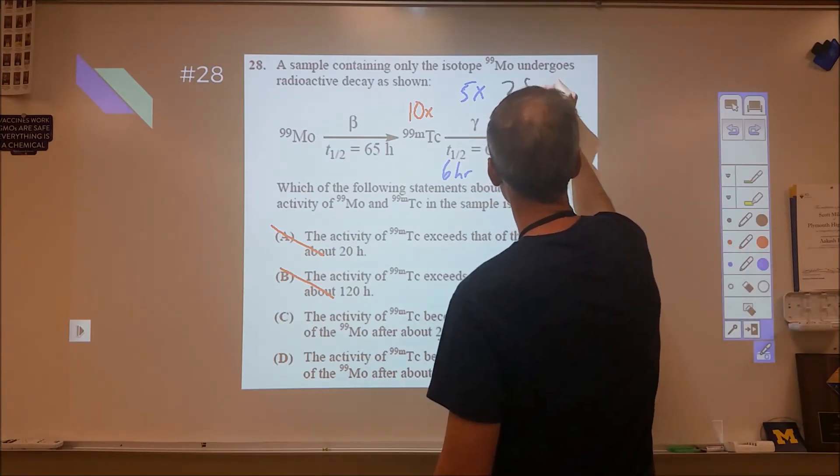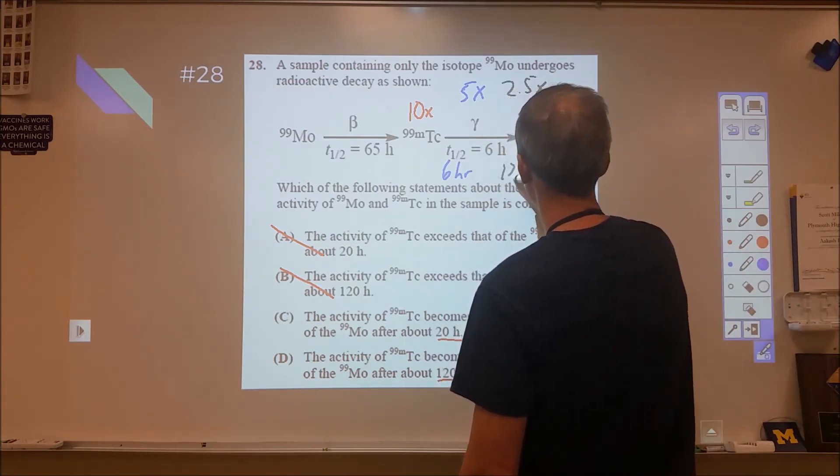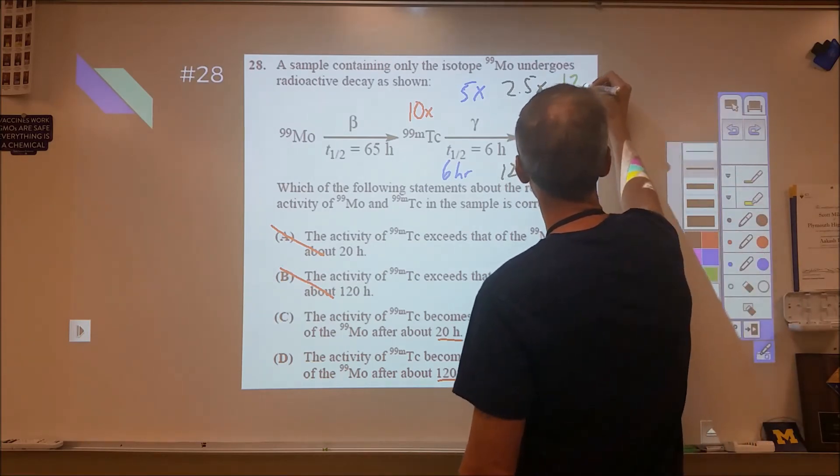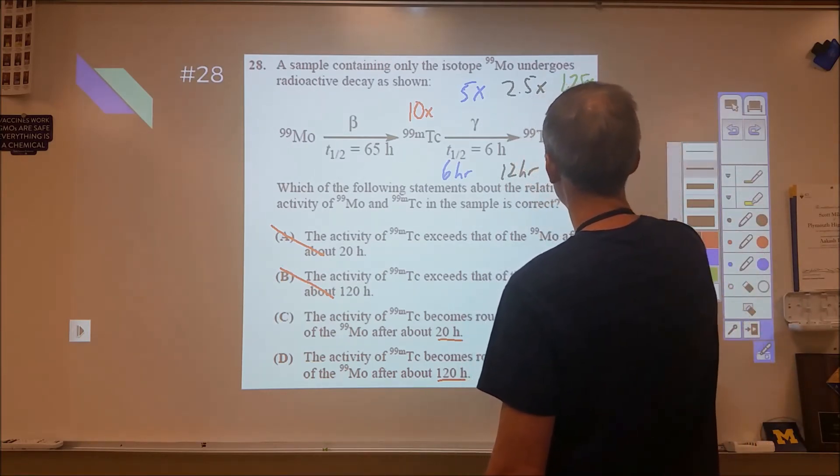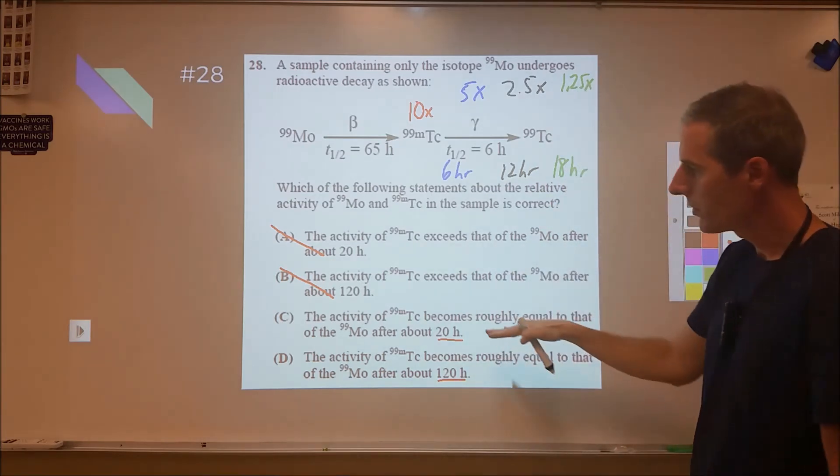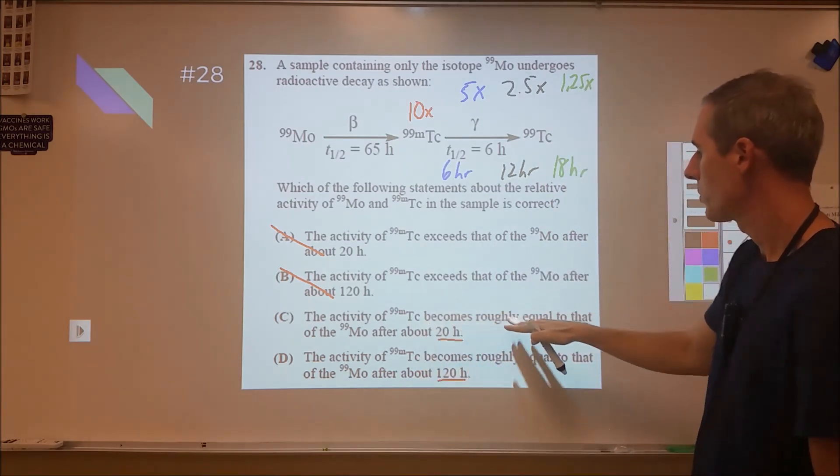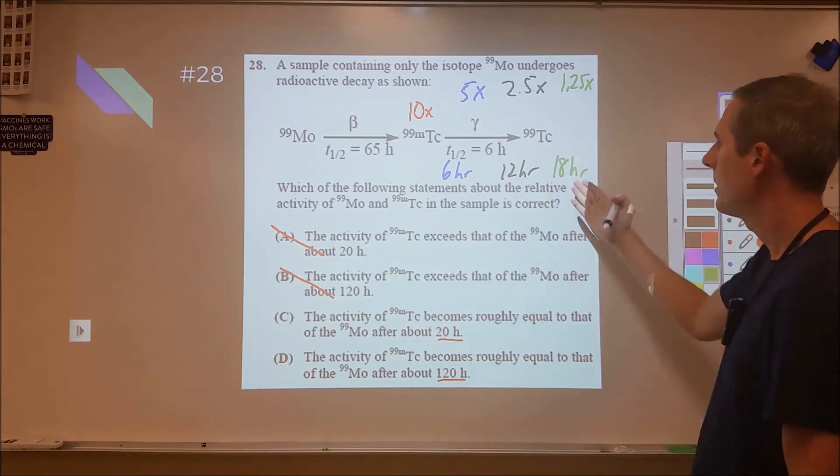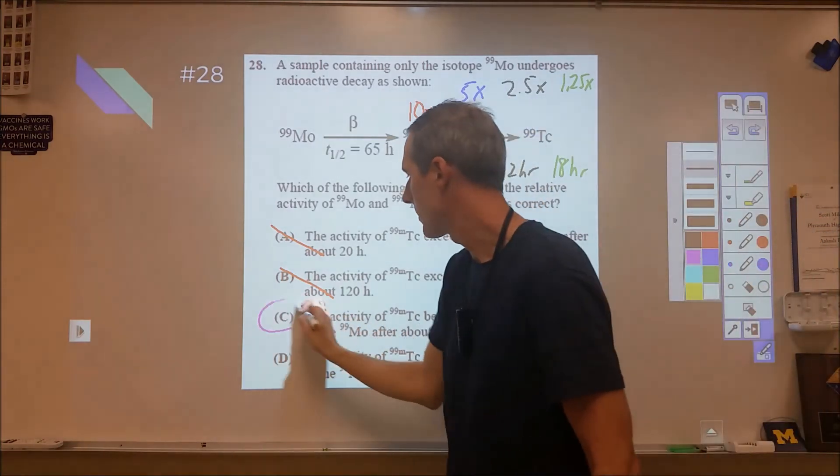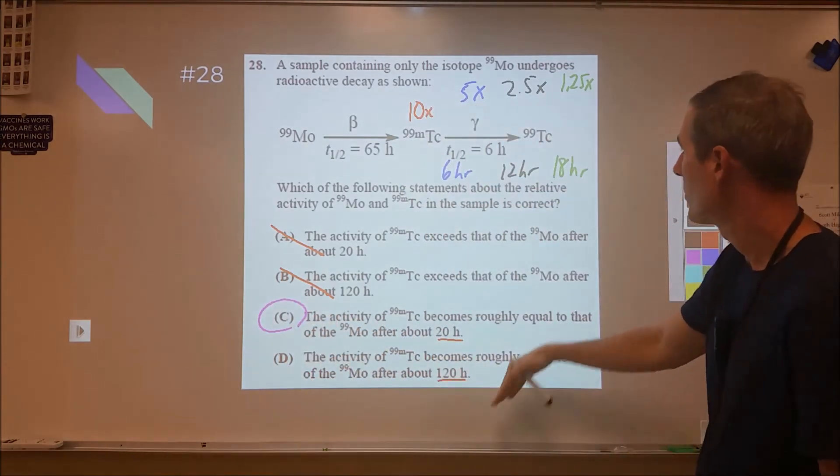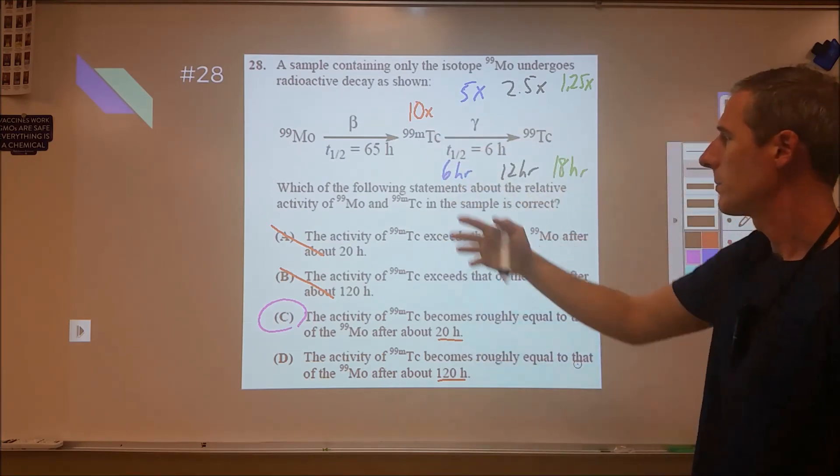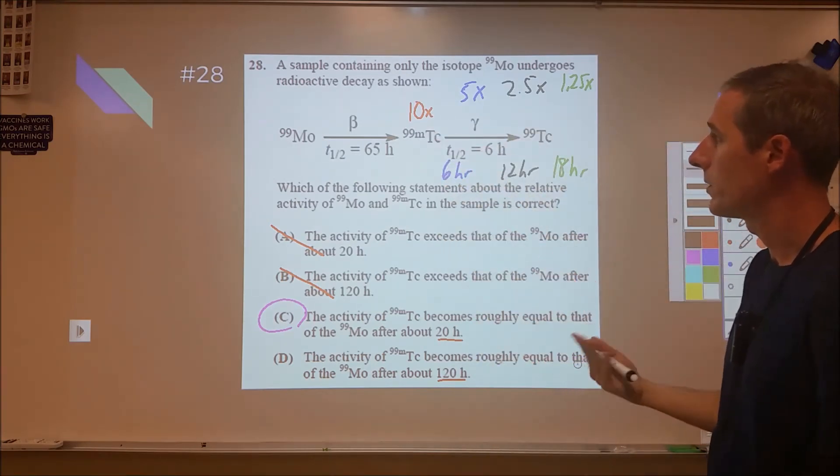So in C, it says the activity of technetium becomes roughly equal to that of the molybdenum after 20 hours. Well, that kind of matches what I'm progressing here. I need to go down a little bit more in radioactivity and therefore C is my answer. D says after 120 hours. After 120 hours, this would be so cut down that it's basically getting used up because its half-life is so high.